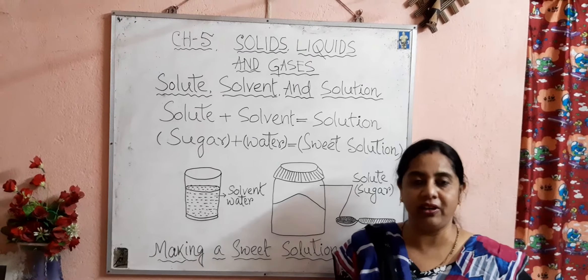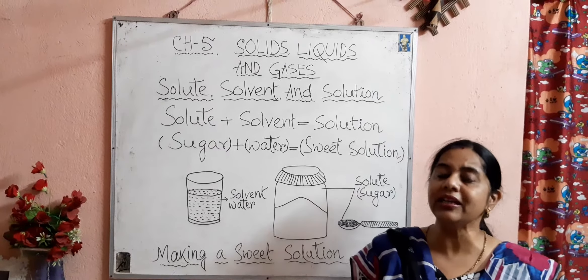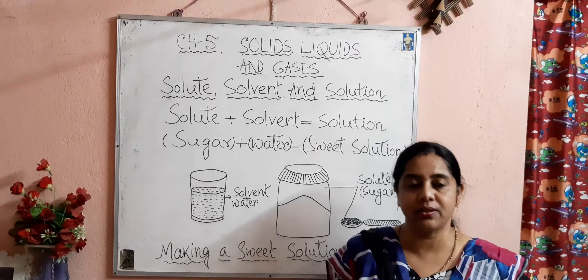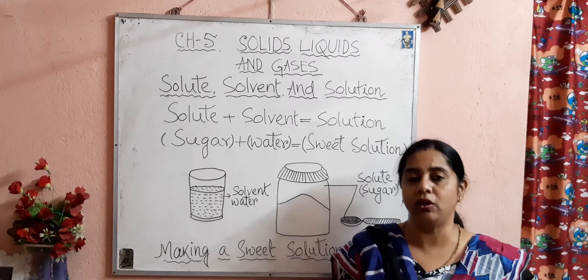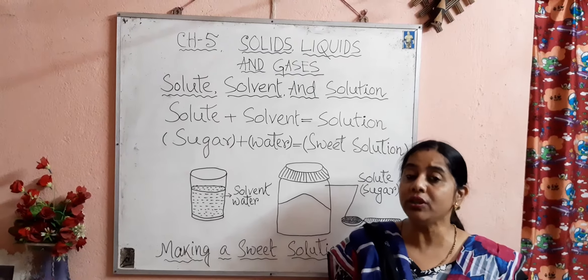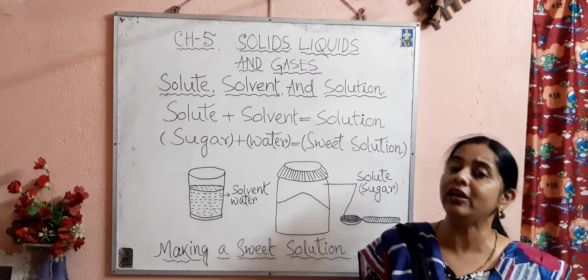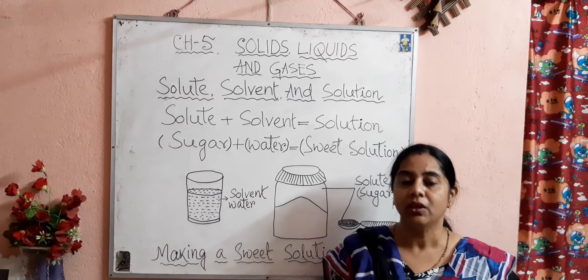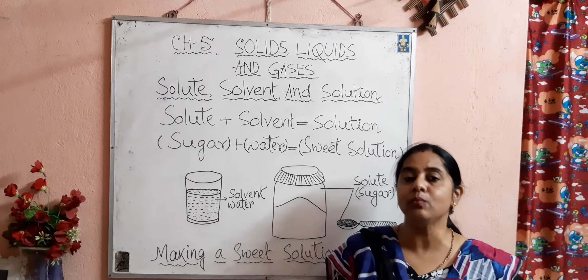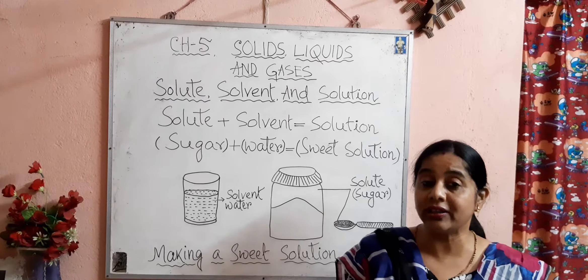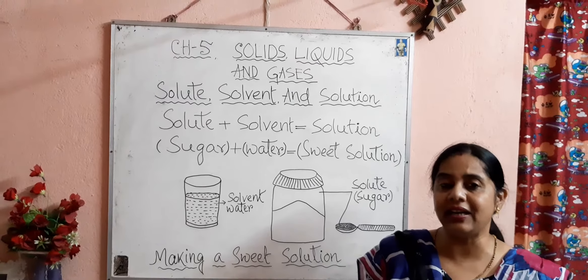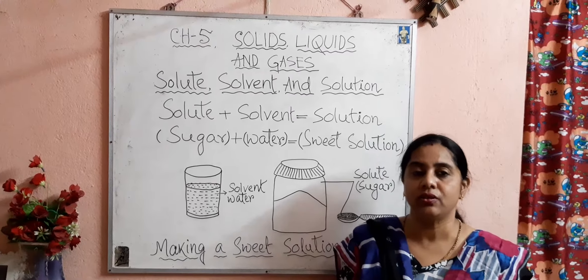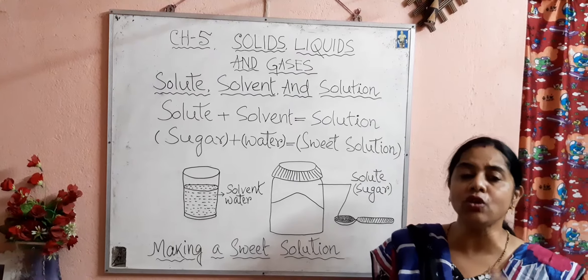There are some solid materials which are easily dissolved in a liquid — they are known as soluble substances. And there are some solid substances which are not dissolved in a liquid — they are known as insoluble substances. Salt and sugar are some soluble substances, while chalk dust and sand are some insoluble substances.